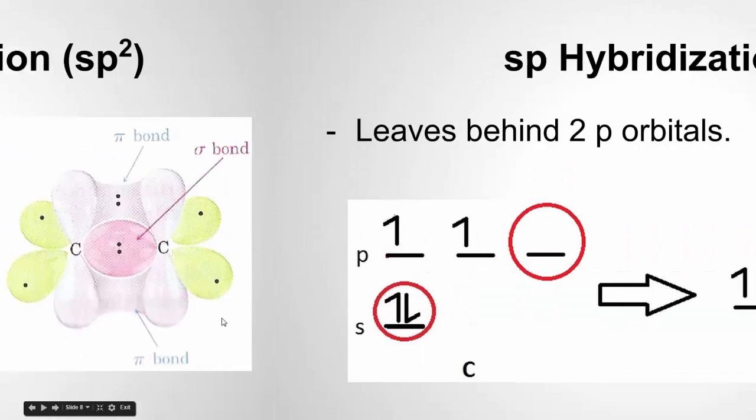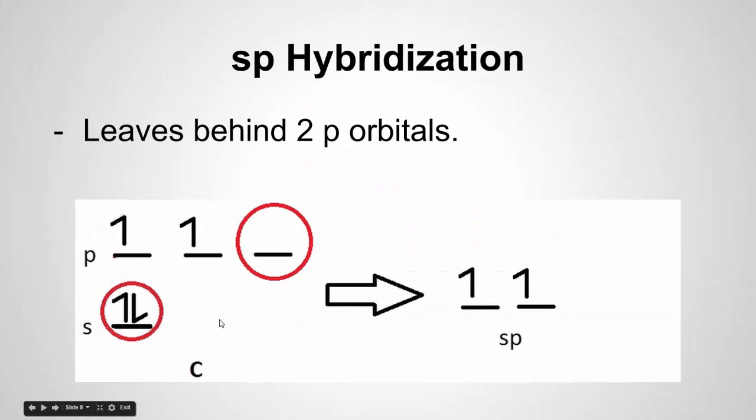I want to mention, the SP2 hybrid only has three electron domains because it's got the double bond and then two single bonds. Remember, a double bond counts as one electron domain. Therefore, it's going to have a trigonal planar geometry, and the bond angle is going to be roughly 120 degrees between each of those bonds. It would be 109.5 degrees for a tetrahedral with the SP3.